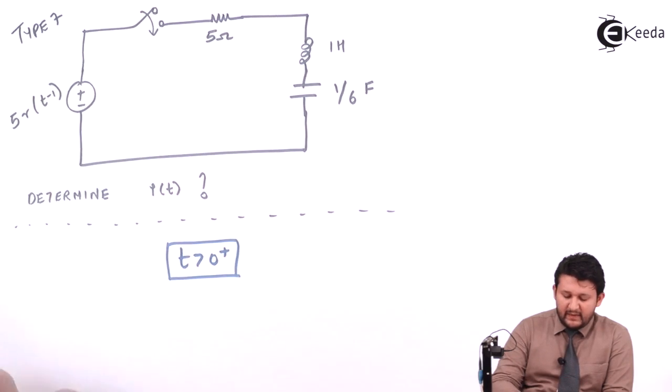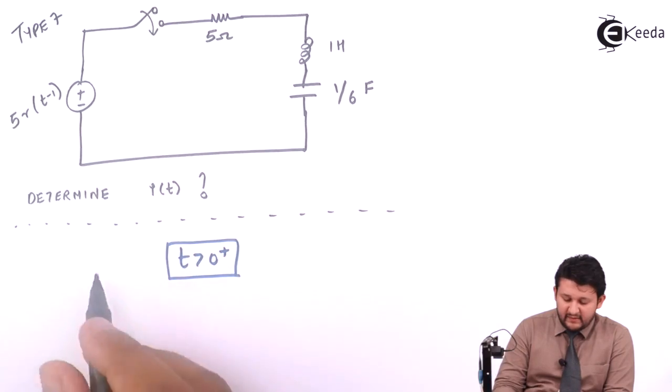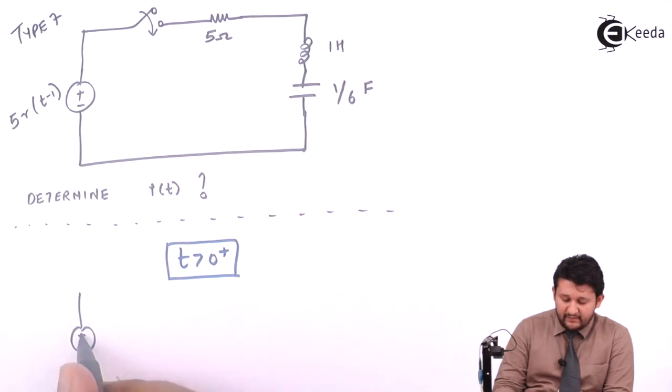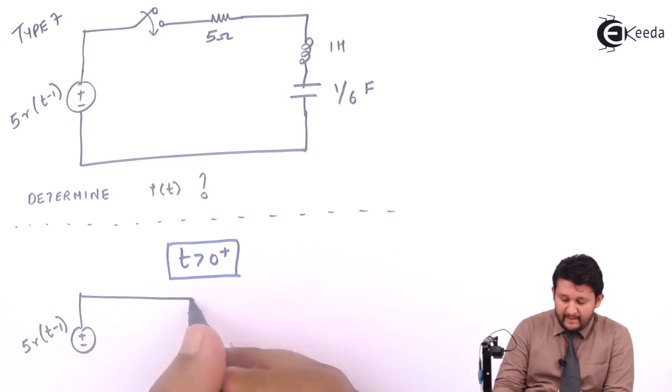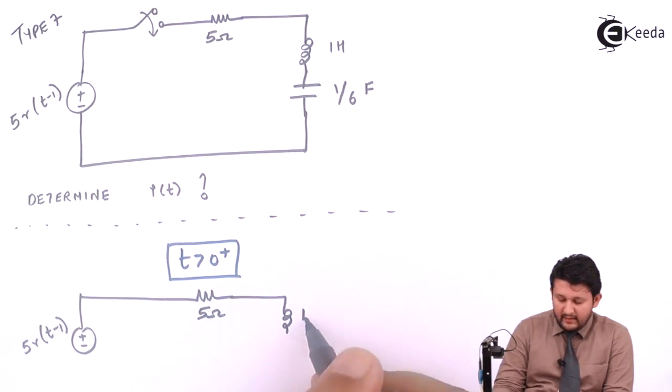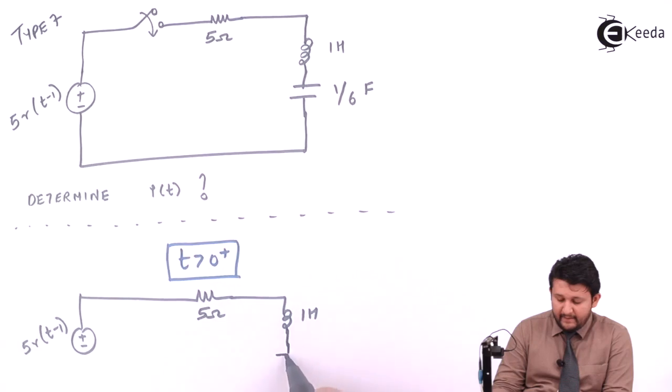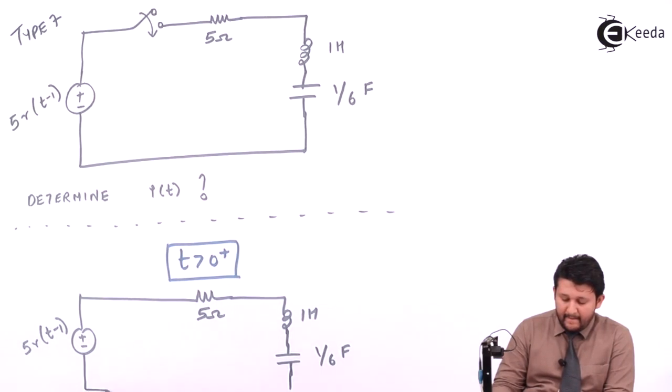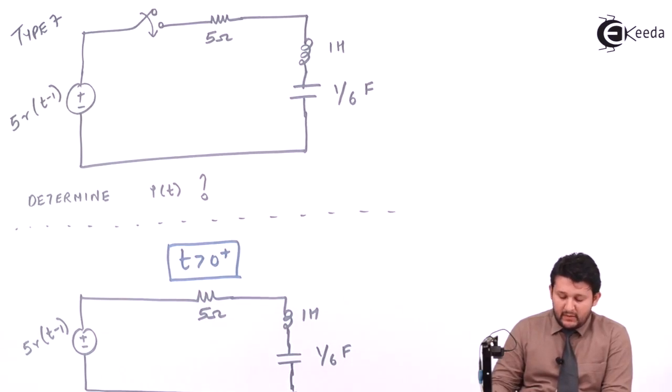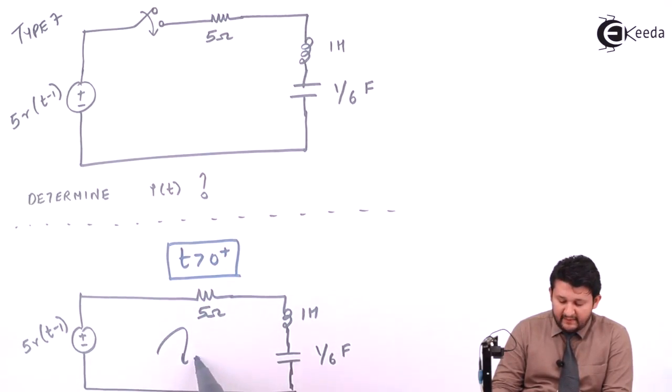So let's start with t greater than 0. Your circuit will be in this form: the switch will be closed, plus minus 5R, t minus 1. You have a resistance 5 ohm, inductor 1 henry, a capacitor 1 by 6 farad. So in this case I have I of t.